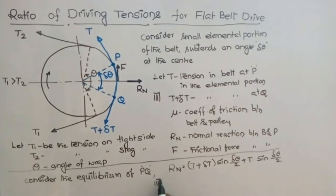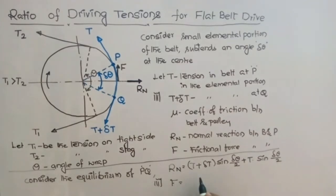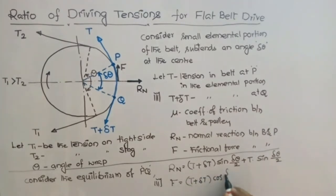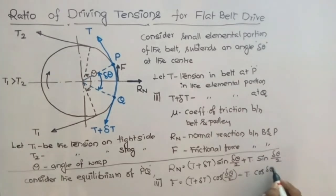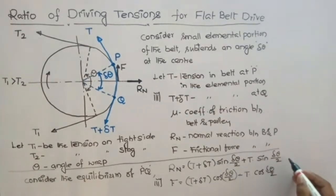Similarly, resolving forces vertically, you will get F equal to mu Rn. So F is equal to (T plus delta T) into cos(delta theta by 2) minus T into cos(delta theta by 2). Let us call this equation number 1 and this equation number 2.